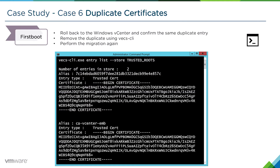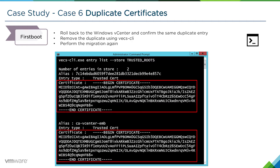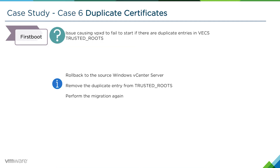Back on the Windows vCenter server that we've powered back up, we'll again confirm that there is indeed a duplicate — a duplicate entry with the exact same certificate information but two different aliases. We'll keep the first alias with the long string UUID identifier and delete the second entry. Once we delete the second entry again using VEX CLI, we can perform the migration again and the migration should succeed this time.